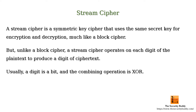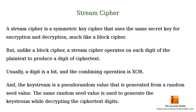Usually a digit is a bit and the combining operation is XOR. The key stream is a pseudo-random value that is generated from a random seed value. The same random seed value is used to generate the key stream while decrypting the ciphertext digits.